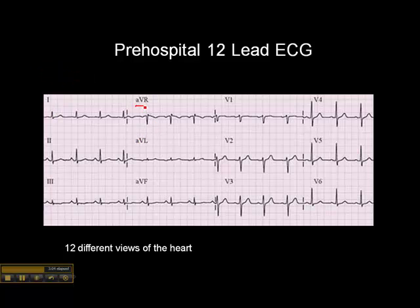Leads 1, 2, and 3 are bipolar leads, and the same electrodes are used for AVR, AVL, and AVF, except that AVR, AVL, and AVF are unipolar leads. The A stands for augmented, because if you have the electrode on the right arm looking at the heart from that distance, the ECG complexes would be very tiny. So the machine augments the vector — the size of the complex — internally. That's why it's called augmented vector right, augmented vector left, and augmented vector foot, referring to the electrode placed on the left foot.